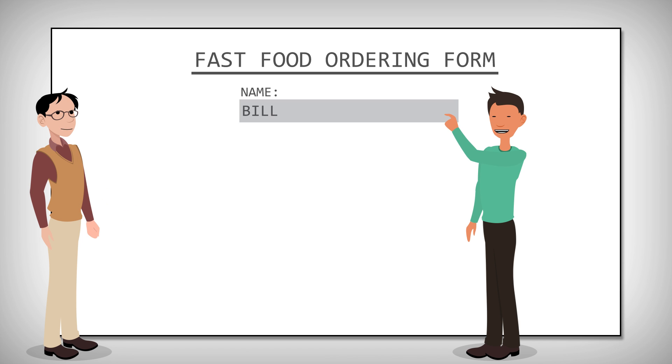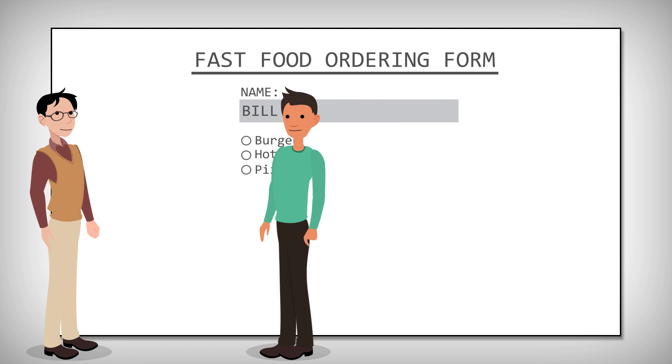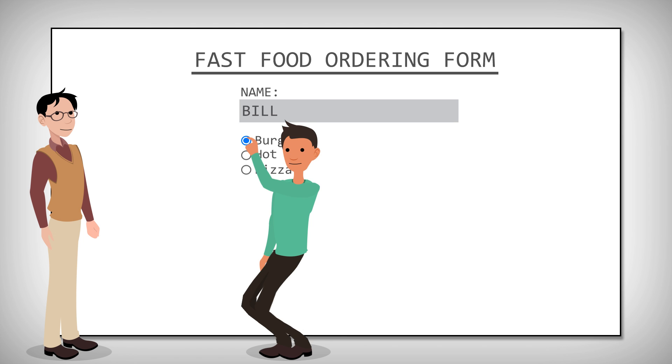My name is Bill. Input type radio displays a radio button. It lets a user select one option from a number of choices. Hmm, this one. The burger.